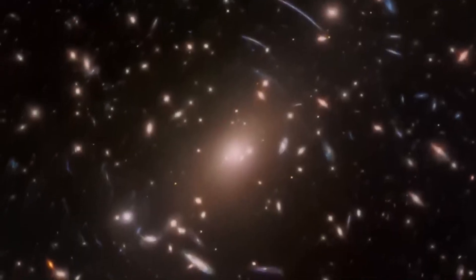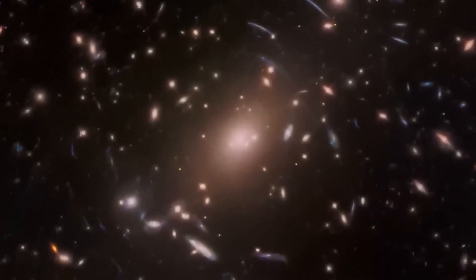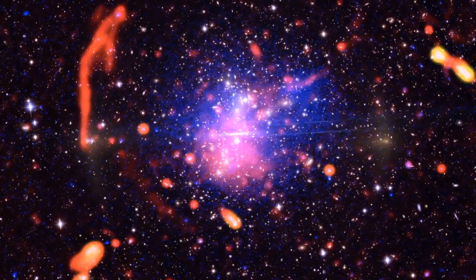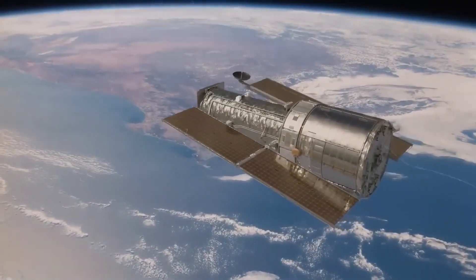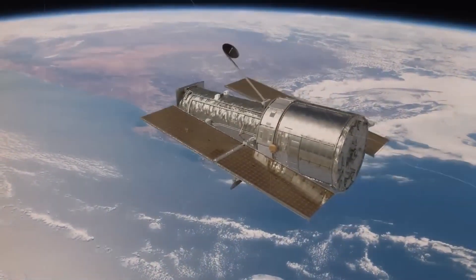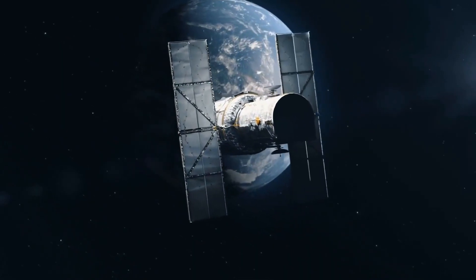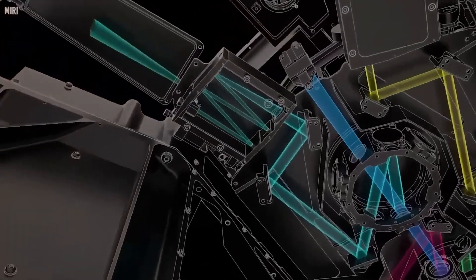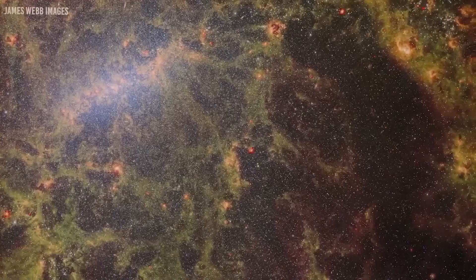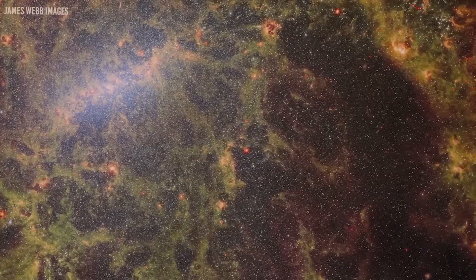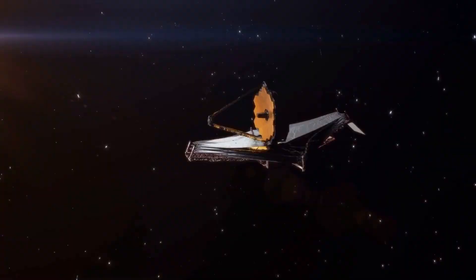The image of Pandora's Cluster, previously known as ABEL 2744, revealed previously unseen details in the region. While the Hubble Space Telescope had only studied the central core of this space, the James Webb Telescope's infrared instruments exposed a wealth of hidden secrets waiting to be unraveled. The team of scientists working on the JWST realized that they were on an extraordinary observation mission.